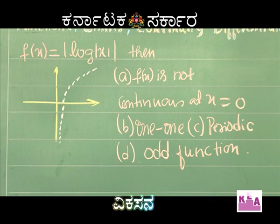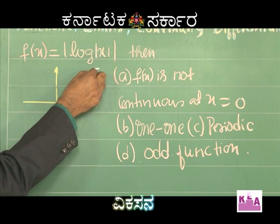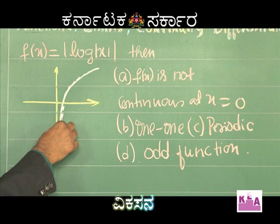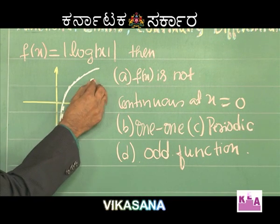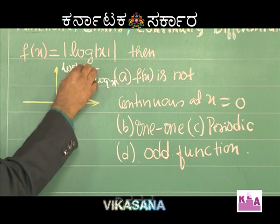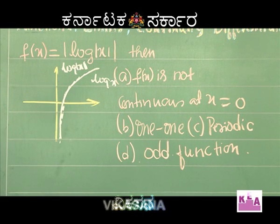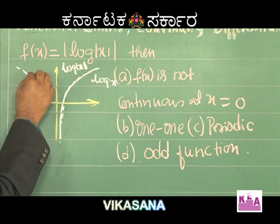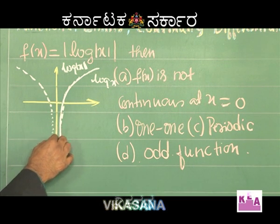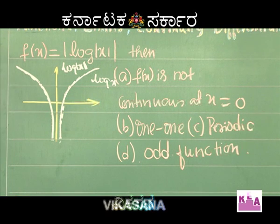Now, how to draw the graph of log|x|? When you have f(|x|), it is very simple: just draw the graph — whichever part is towards the right side of the y-axis, draw it as it is. Then, log|x| means you retain the part of the graph on the right side of the y-axis and write its replica over the y-axis towards the left side.